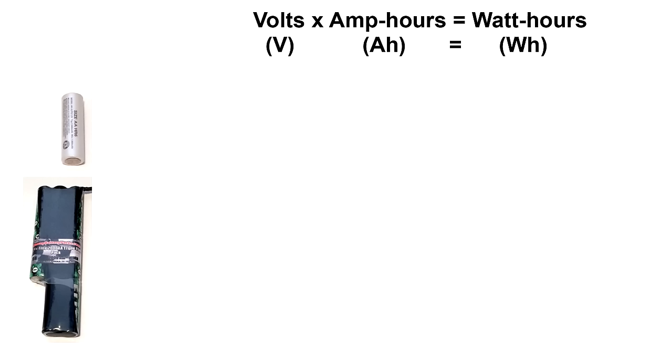So one way we can compare the stored energy of these two batteries is to use another unit called watt hours. Volts times amps equals watts. So you can probably guess that volts times amp hours equals watt hours. The single cell has a capacity of 2.4 watt hours, and the larger battery pack has a capacity of 19.2 watt hours. Now it's more obvious which battery stores more energy, because we're comparing apples to apples and watt hours to watt hours.